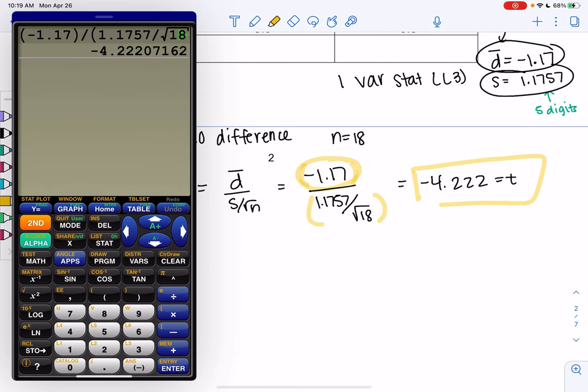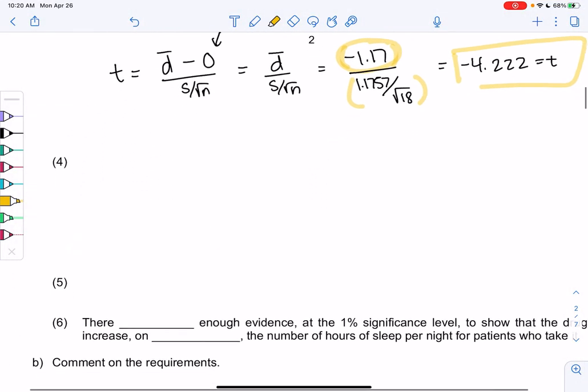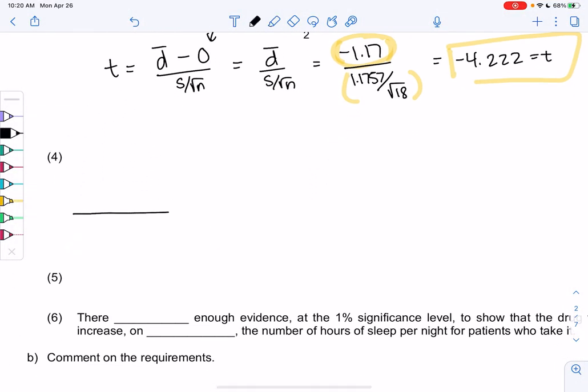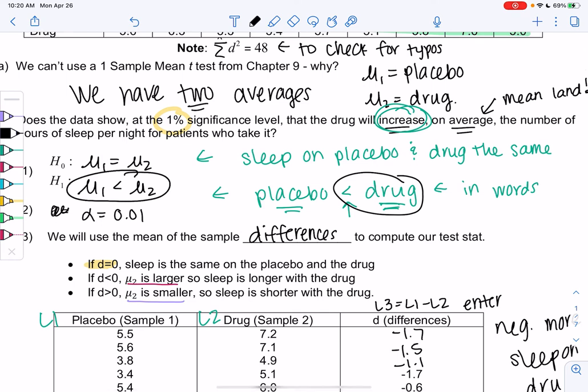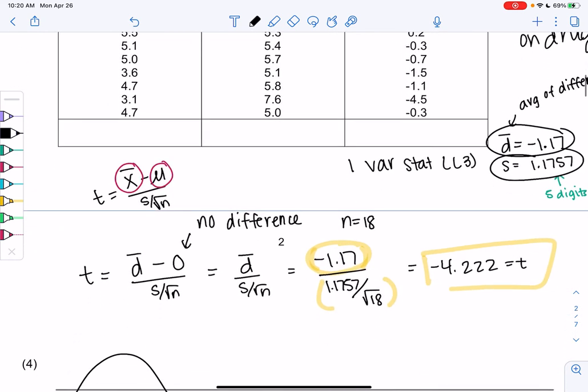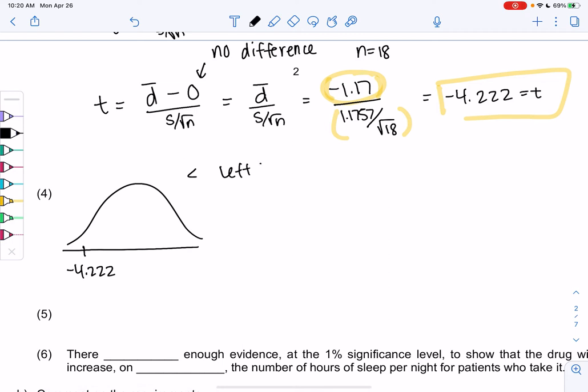Step four is p-value. We like to draw the curve. Negative is on the left side, so negative 4.2222. We have to decide which tail we're using. That comes from here. Since it's pointing to the left, it's left-tailed. We'll shade the left side for less than. We don't have to double because it's a single tail. Degrees of freedom is 18 minus 1 or 17.